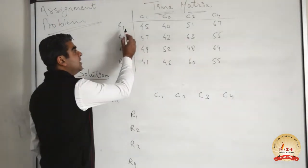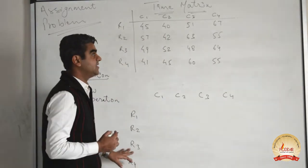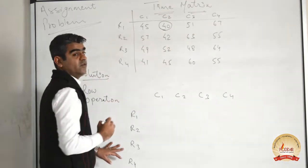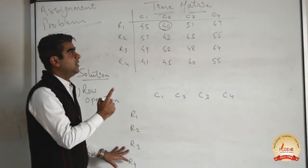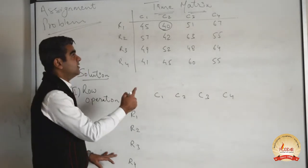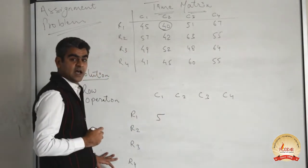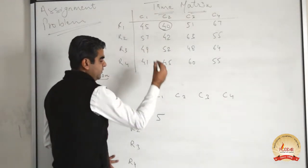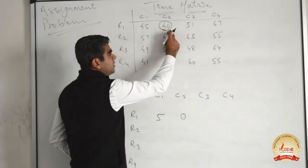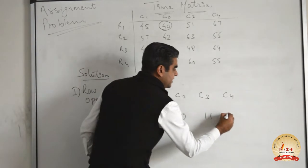Our first step is row operation. In row number 1 we have 4 elements: 45, 40, 51, and 67. The minimum element in row number 1 is 40. We subtract 40 from all elements of row number 1 to create a new matrix. So 45 minus 40 is 5, 40 minus 40 is 0, 51 minus 40 is 11, and 67 minus 40 is 27.